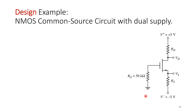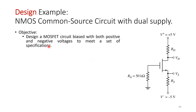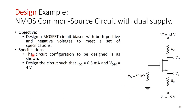The first design example is an NMOS common source circuit with dual supply. RG is given as 50 kΩ, but RD and RS are not given. The objective is to design a MOSFET circuit biased with both positive and negative voltages to meet a set of specifications. Design the circuit such that IDQ = 0.5 mA and VDSQ = 4 V. The Q point is given, but we need to find the resistance values that bias the MOSFET to achieve this Q point.